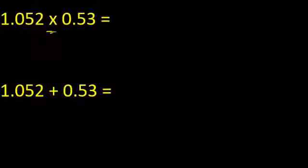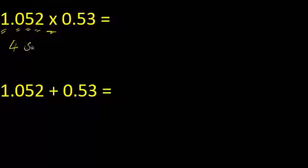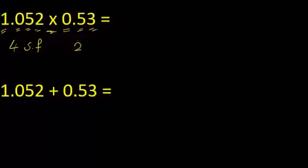For multiplication, we follow the rule of the least number of significant figures. Let's count the significant figures in each number. The first one: one, two, three, four — this one has four significant figures. What about the second one? It has a leading zero, which we don't count. So one, two — this one has two significant figures.